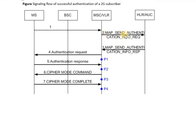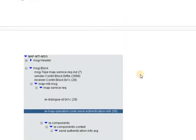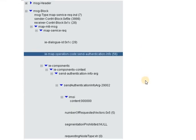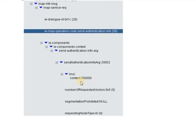The first message is the send authentication info request message sent from the MSC to the HLR. The most important information elements are the IMSI of the handset, which is sent to the HLR, and the number of requested vectors. The requested vectors are used by the MSC to perform the authentication process — in this case the MSC is requesting five authentication vectors from the HLR.